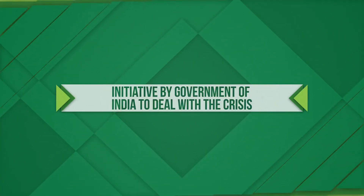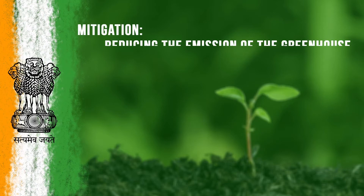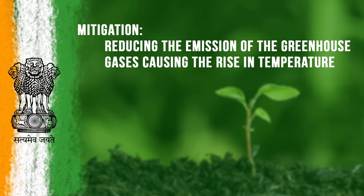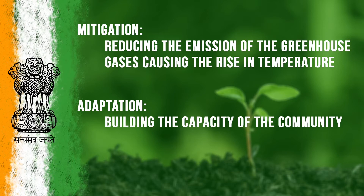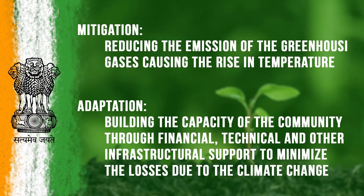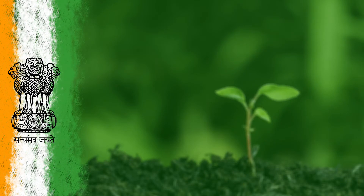What are the initiatives taken by the government of India to deal with the global warming crisis? The initiatives can be classified into two broad categories: mitigation — reducing the emission of greenhouse gases causing the rise in temperature — and adaptation — building the capacity of the community through financial, technical and other infrastructural support to minimize the losses due to climate change. The major initiatives are plans and policies.